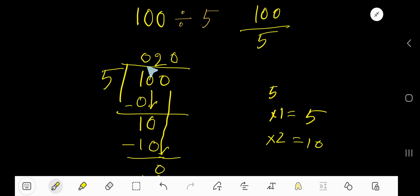That is, since this 0 is in the left-hand side of 2, this 0 doesn't carry any value. That is 20 is the answer. 100 divided by 5, that is 20.